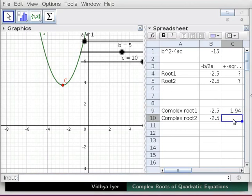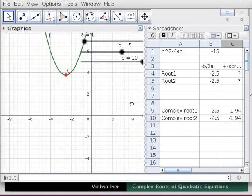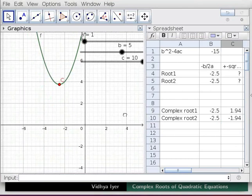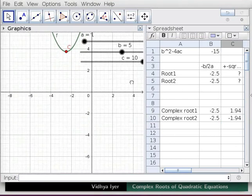In cell C10, type -C9 and press Enter. -1.94 appears in C10. Click in and drag Graphics View to see the following complex routes.